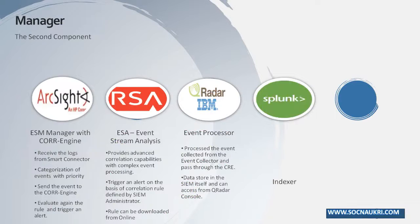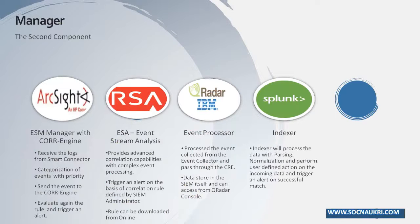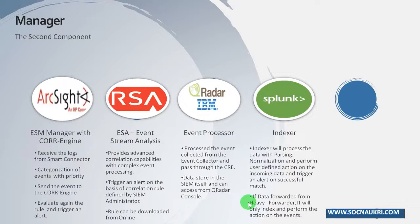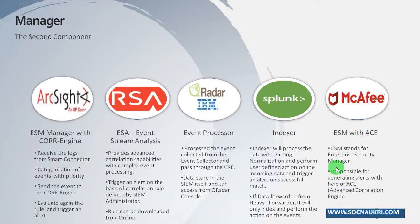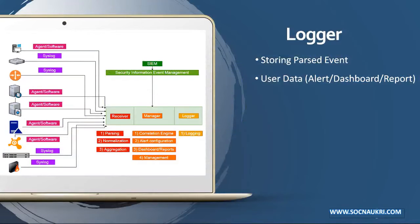In Splunk, the Indexer is the second component, used for parsing, normalization, aggregation, and storing data coming from the forwarder. If receiving data from a Universal Forwarder, the indexer will first parse the data and then index it — this indexing process is known as event processing, like storing the extracted parsed fields in folders referred to as buckets. If receiving data from a Heavy Forwarder, the indexer will only index the data. In McAfee, Enterprise Security Manager is the second component, responsible for generating alerts with McAfee Advanced Correlation Engine, which correlates and identifies patterns in logs to identify potential security threats based on defined rules.